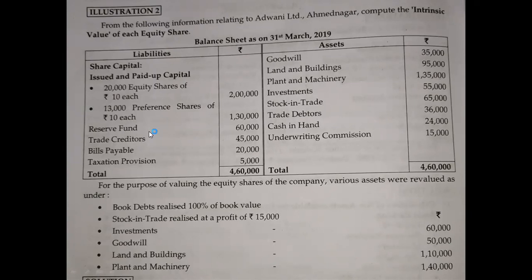The reserve fund is the company's own fund. Creditors, bills payable — these are outsider liabilities, so we will not include them. Equity share capital, preference share capital, and reserve fund are the company's own funds. On the asset side: goodwill, land and building, plant and machinery, investment, stock in trade, trade debtors, and cash in hand. These assets are revalued. However, underwriting commission is a fictitious asset, so we will not take it.